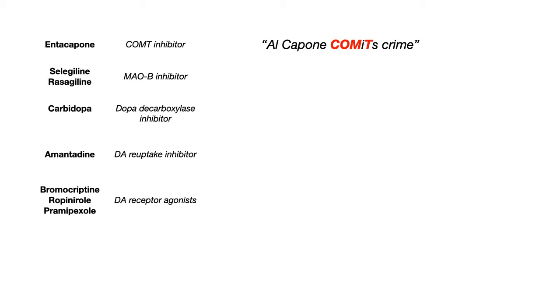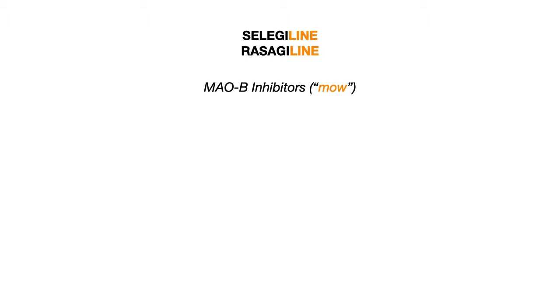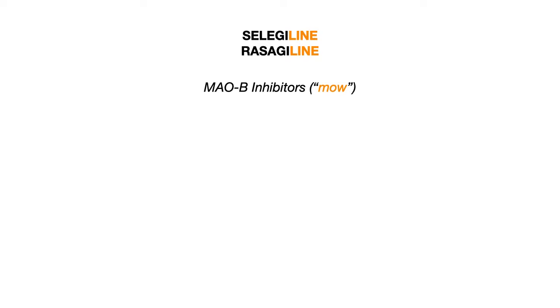Selegiline and rasagiline — as you'll notice, both end in '-line.' And MAO-B inhibitors — some people say the shorthand 'MOB inhibitors' or 'MO inhibitors.' So selegiline and rasagiline both have 'line' in the name and they are MOB inhibitors. The easy way to remember this is that you want really sweet lines when you mow the lawn. When you're mowing the lawn, you want those lines they put on football stadiums, soccer stadiums, et cetera. So anything ending in '-line' is a MO inhibitor, specifically a MAO-B inhibitor.